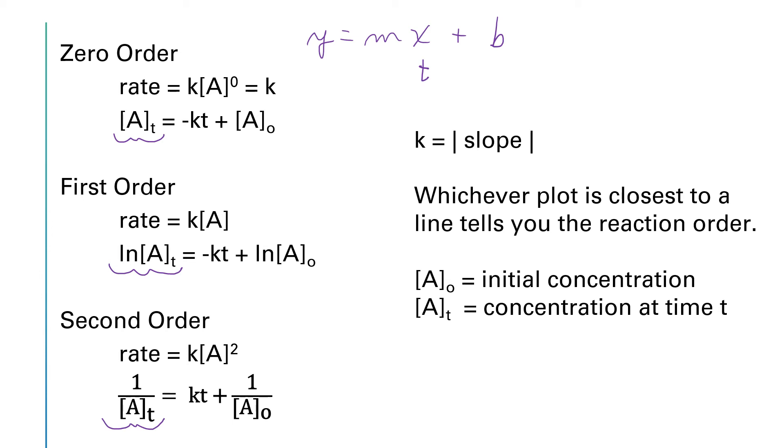Now, regardless of what order it is, there's something really important about the slope, right? So the slope is that term that's going to be multiplied by t. I'm going to just draw a box around what's multiplied by t in each of these three equations. For zero and first order, t is multiplied by -k, where k is the rate constant. And for a second order, t is multiplied by k.